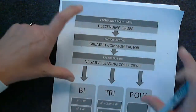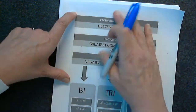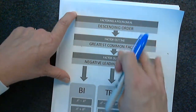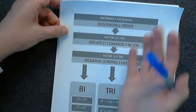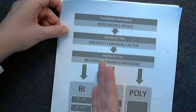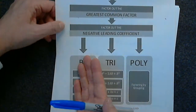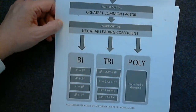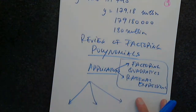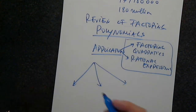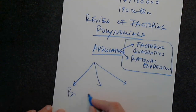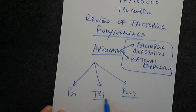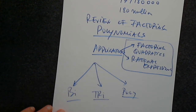The beginning part is the same for all three. Once you go through all the initial questions, then you will separate — it's either a binomial, a trinomial, or a polynomial. Three different situations.